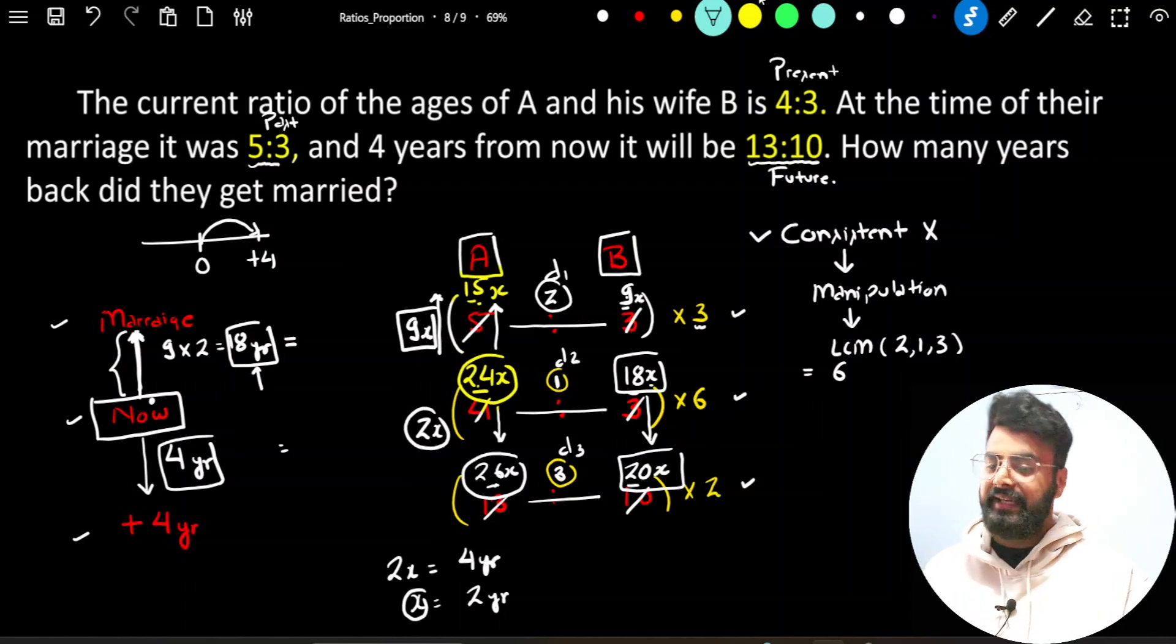क्या sir, मैं अगर B वाला data का use करता, तब भी same answer ही आता। देखो, B की age present में कितनी है: 18x, जब उसकी शादी हुई थी तब कितनी थी: 9x। अगर तुम देखोगे, यहां पे कितने का difference आया, 9x का difference आया। x का value क्या है? x का value 2 है। So यह 9x का difference है, यह किसके equivalent है? यह total create हुआ 18 years में. So again, you will get the same answer. Either use A or B, you get the same answer.